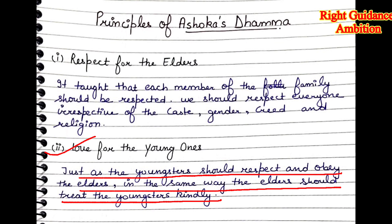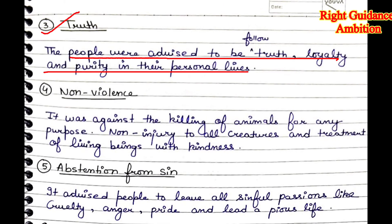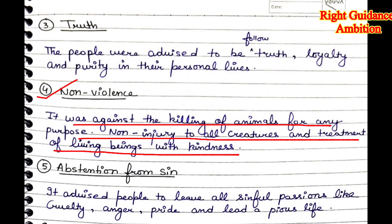Elders should respect the young ones and listen to their viewpoint well. The third point is truth — people were advised to follow truth, loyalty, and purity in their personal lives. People should speak truth, always be loyal, and live a simple and pure life. The fourth point is non-violence — it was against the killing of animals for any purpose, whether for havans or sacrifices.